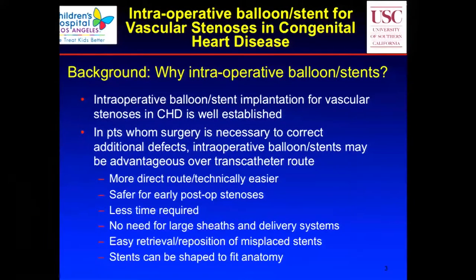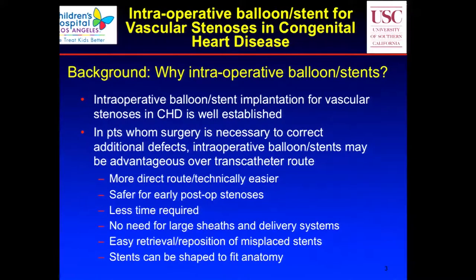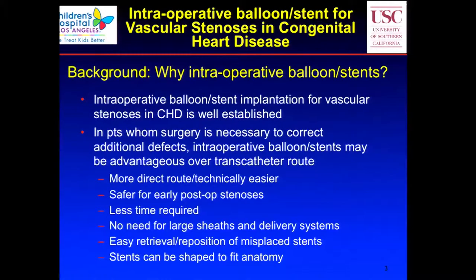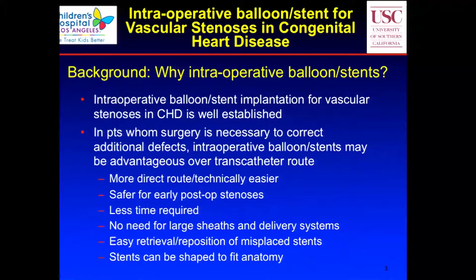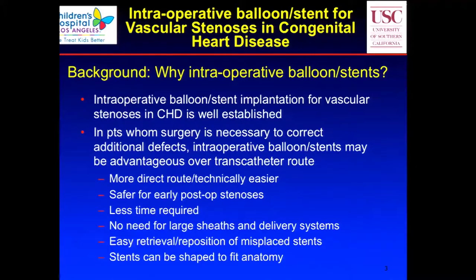Why do we need to do intraoperative ballooning and stenting? Intraoperative stenting is well established. In patients where surgery is necessary to correct additional defects, it may be advantageous to use that same opportunity to perform the ballooning or stenting rather than two separate procedures — one in the catheter lab and one in the operating room. It's more direct, technically much easier, and for early post-op stenosis it's safer because you can control bleeding. It also takes a lot less time and there's no worry about large sheaths and delivery systems.